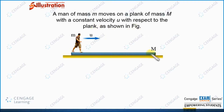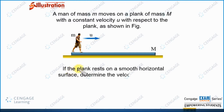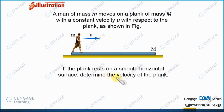In this figure, you can observe this is a man of mass small m, and this man is moving with respect to the plank with the velocity U in the rightward direction. In the next part of the question, it is given that if the plank rests on the smooth horizontal surface, that means there is no friction between the plank and ground, then we need to calculate the velocity of the plank when the man moves.